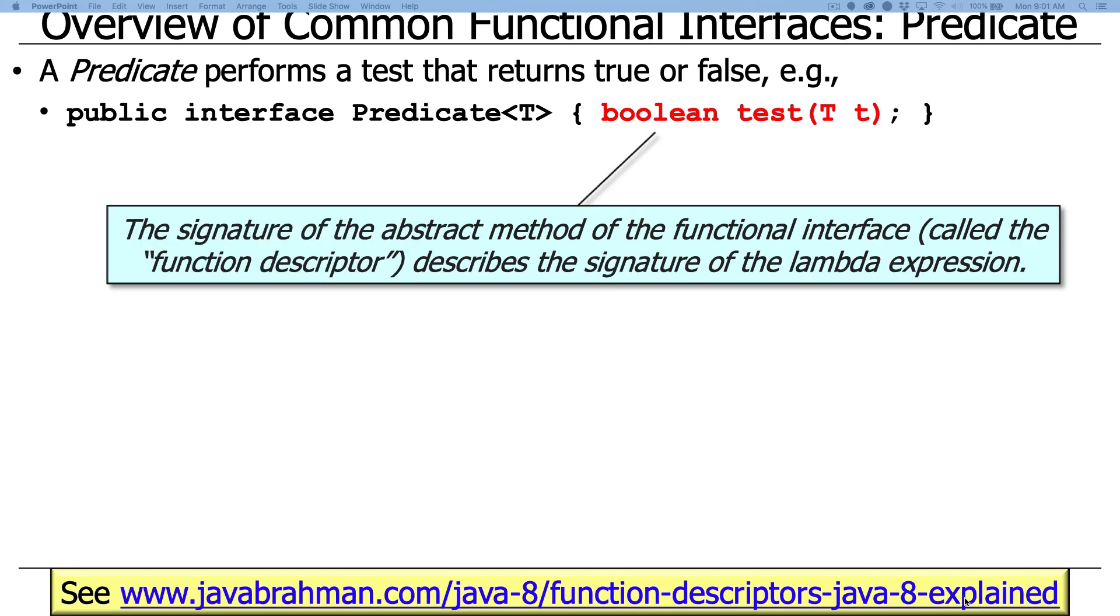The signature of the abstract method of the functional interface, in other words, the signature being takes an object of type T and returns a Boolean, is called the function descriptor. You can read more about that down in this link. And this describes, as the term implies, the signature of the lambda expression. And you'll see in a second why I'm making a big deal about this, because we're going to end up using magic type deduction mechanisms in Java 8 and beyond to let you write lambda expressions or method references where you can avoid having to specifically define an anonymous inner class with a specific method named test.